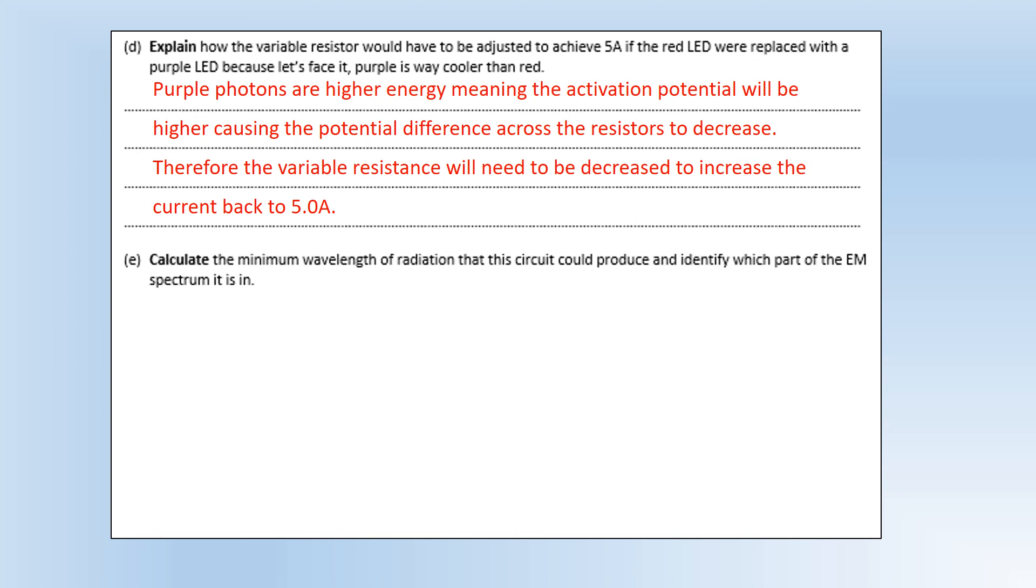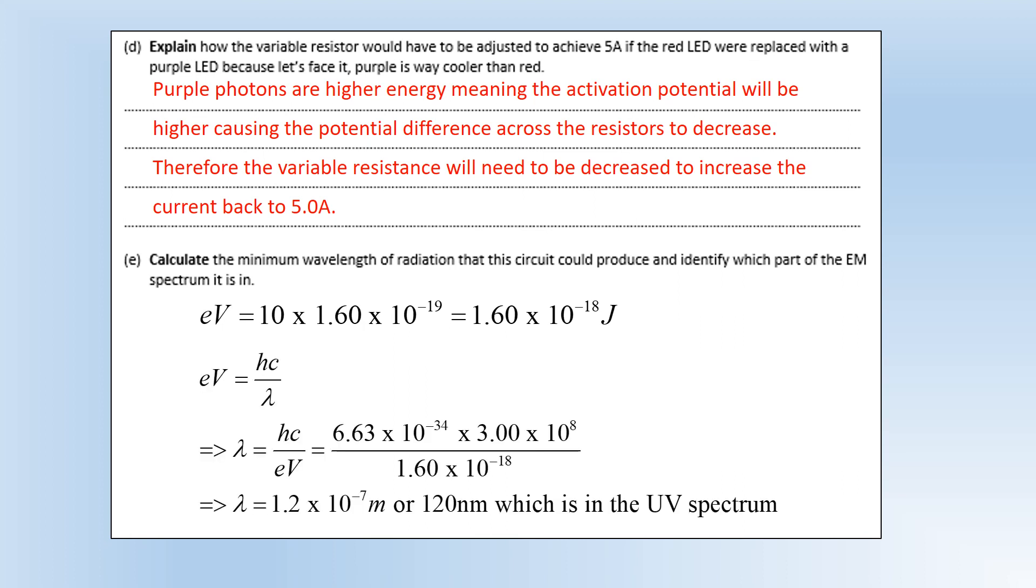Okay, and then to finish off, calculate the minimum wavelength of radiation this circuit could produce and identify which part of the electromagnetic spectrum it is in. So first of all let's calculate the maximum photon energy, which would be this one, when all 10 volts from the emf source would go to the LED. And then once we know that we can calculate what the wavelength is using those values, and it turns out to be about 120 nanometers, which is just shorter than the visible. So that's going to be in the UV spectrum. Okay.